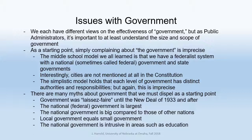As public administrators, it's important for us to understand the size and scope of government. Simply complaining about government is imprecise. In the middle school model, we learned that we have a federalist system with a national government and state governments — that's really what the Constitution says. When we say three levels of government, we usually say national, state, and local. This simplistic model holds that each level has distinct authorities and responsibilities, but even that is imprecise because they're not necessarily distinct — they run over each other.